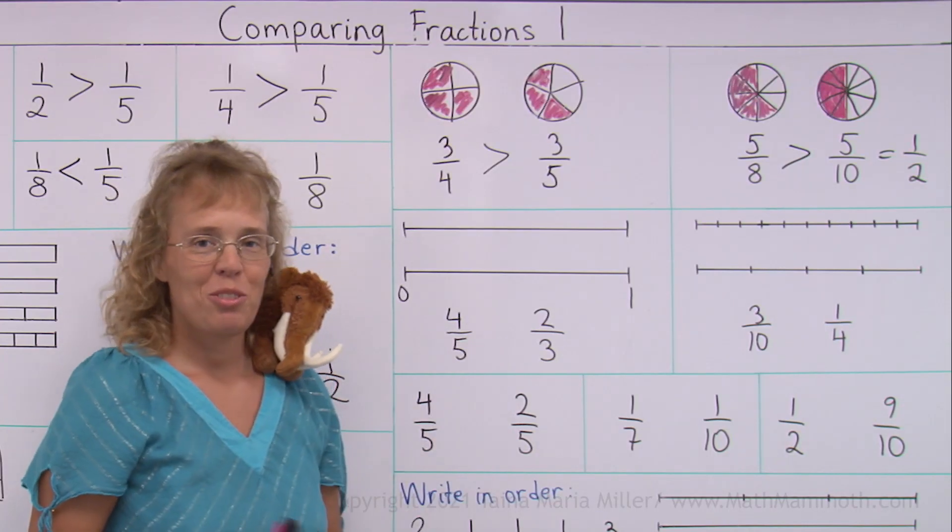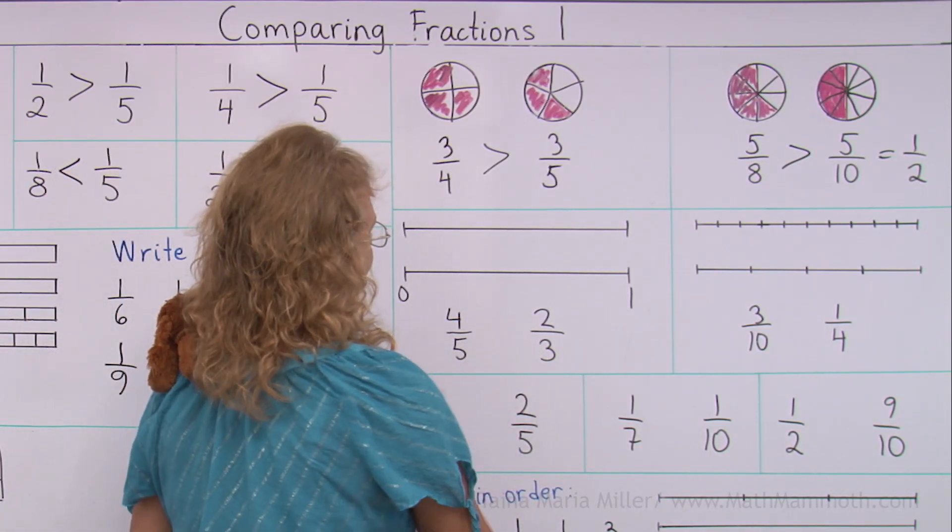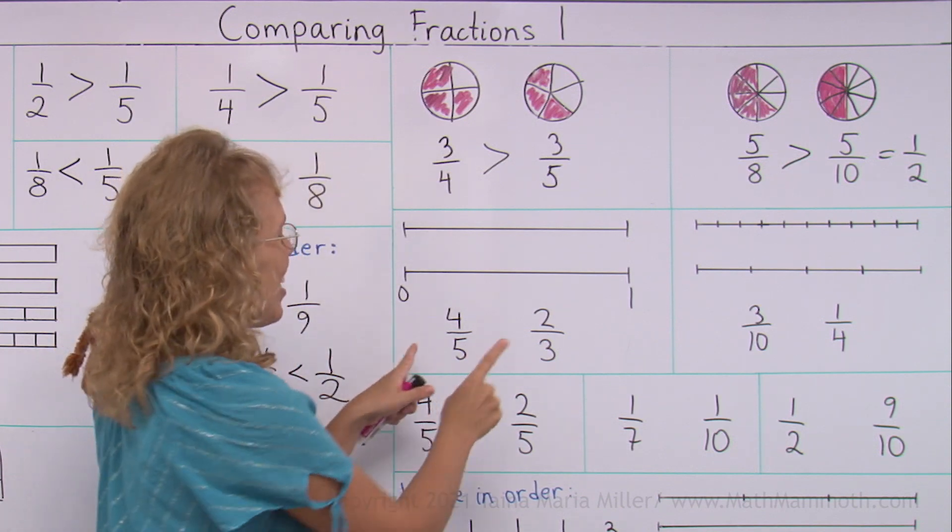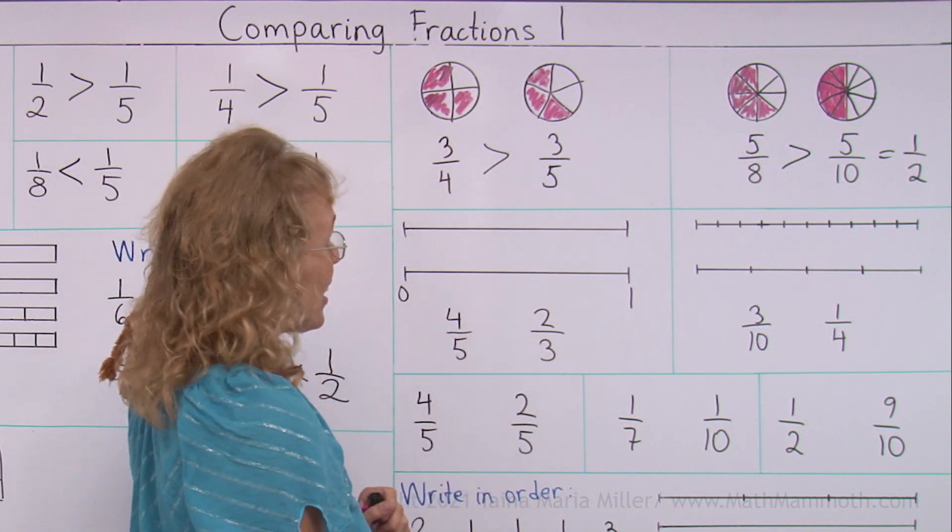Over here, two fractions to compare: four-fifths and two-thirds. This time they have different kinds of pieces, and they don't have the same amount of pieces either.